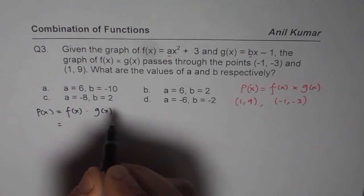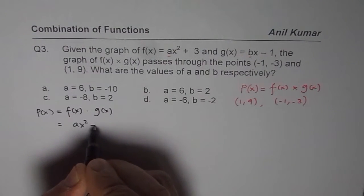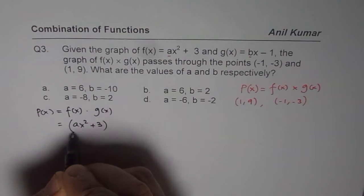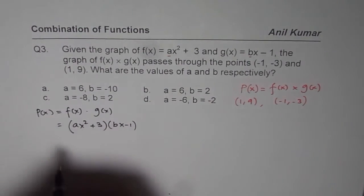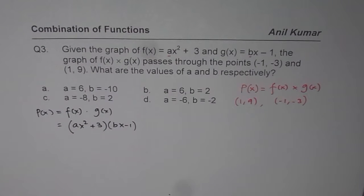Now, f of x is given to us as ax square plus 3 times g of x is bx minus 1. So, that becomes p of x, the product of these 2 functions.